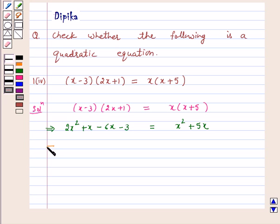Adding the like terms, we get 2x² - 5x - 3 = x² + 5x.